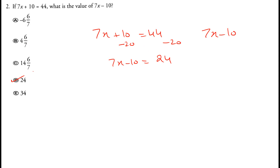You can also use the longer method: calculate 7x as 44 minus 10, which is 34. Then 7x minus 10 equals 34.